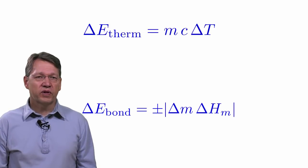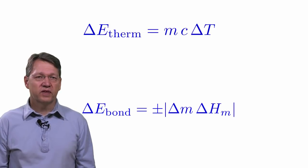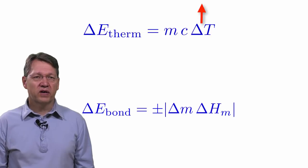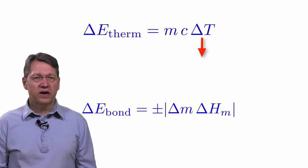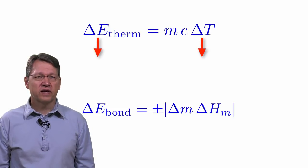The sign convention for thermal energy changes is very simple. If the temperature goes up, then delta T is positive and the change in thermal energy is positive. If the temperature goes down, then delta T is negative and the change in thermal energy is negative.